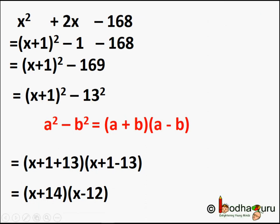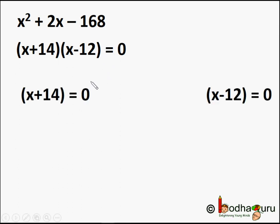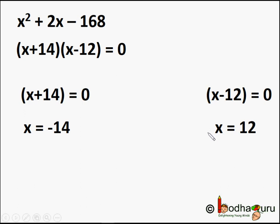So the equation x squared plus 2x minus 168 equals 0 means the polynomial on the left equals 0 when x plus 14 equals 0 or x minus 12 equals 0. This gives us x equal to minus 14 or x equal to 12 — both are the roots of the equation. Since even numbers can also be negative, both are acceptable solutions.